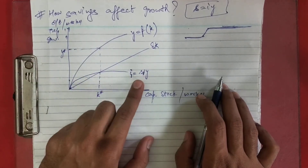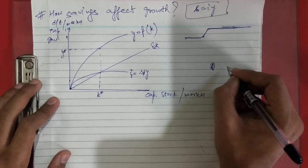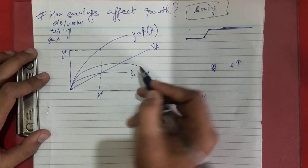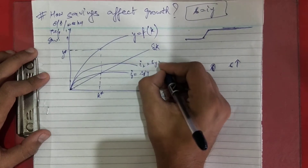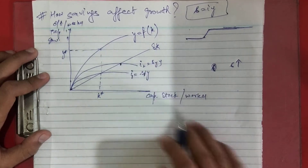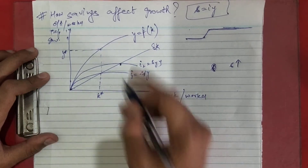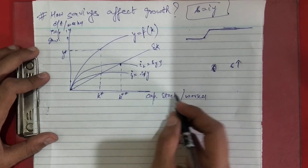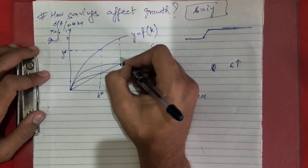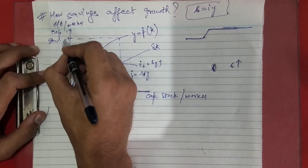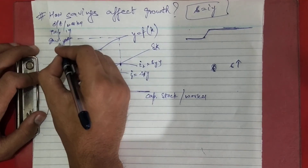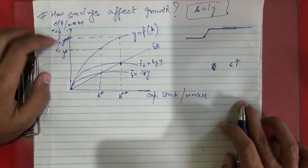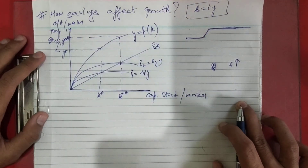Now your saving rate s has increased, so this curve will shift upward. This becomes i2 = s2·y. You can see that your steady state level of capital has increased and come to a new level, k-double-star. Corresponding to this, your y-star has also increased to y-double-star. So output per worker and investment have both increased due to the increase in saving rate.